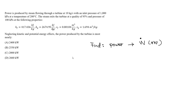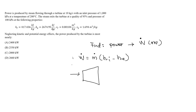So W-dot equals the mass flow rate times (H-inlet minus H-exit). At the inlet we have a temperature of 200 degrees Celsius and a pressure of 1000 kilopascals. Converting to megapascals: 1000 divided by 1000 gives us 1 megapascal. So the inlet pressure is 1 megapascal — we'll need this for our tables.